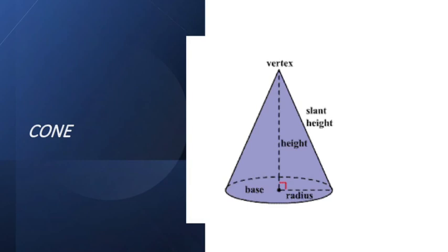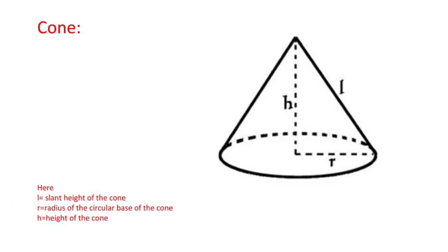Observe the picture. What is there, children, here? Here, slant height, radius, height, base and vertex. So here, L is equals to slant height of the cone. R is equals to radius of the circular base of the cone. H is equals to height of the cone. So L is slant height, H is height of the cone, and R is the radius of the cone.